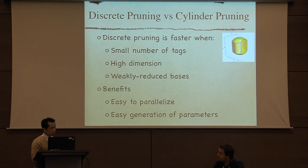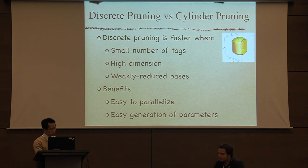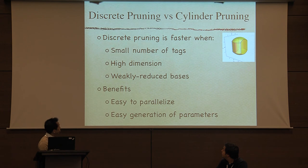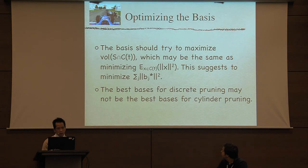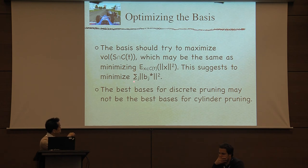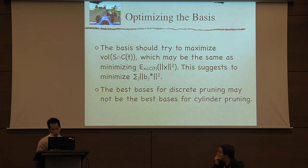Is discrete pruning better than the old pruning? It's not an easy question. Sometimes it's faster, sometimes it's slower. It's faster when the number of tags is small, the dimension is high, and the basis is not too strongly reduced. Benefits of discrete pruning include that it's very easy to parallelize — easy to implement on GPU — and it can easily generate parameters with respect to cellular pruning. The best basis for discrete pruning, obtained by minimizing the sum of Gram-Schmidt norms, may not be the best basis for the old pruning.